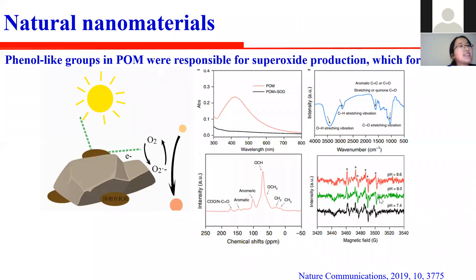EPR analysis coupled with DMPO as a spin-trapping agent confirms the generation of superoxide. NMR and FTIR analysis shows that phenolic groups in the particulate organic matter were responsible for superoxide production under irradiation. It was estimated that the contribution of particulate organic matter to naturally occurring silver nanoparticles is 11 to 31%. This study provides fresh insight into the natural sources of silver nanoparticles in soil.